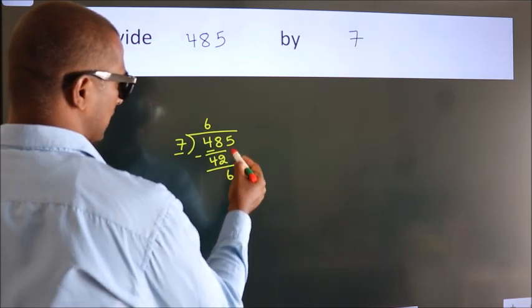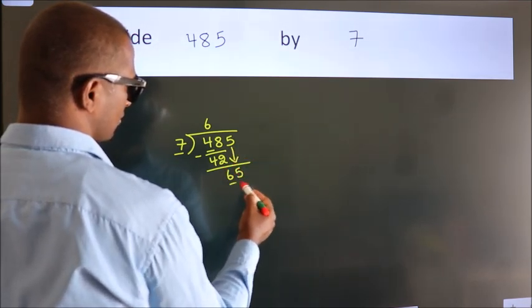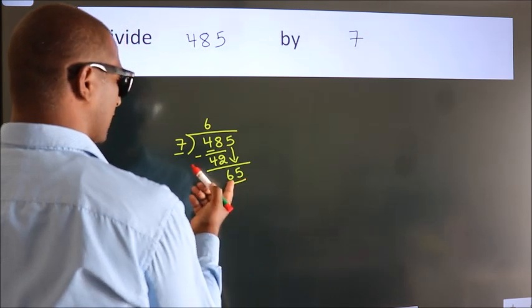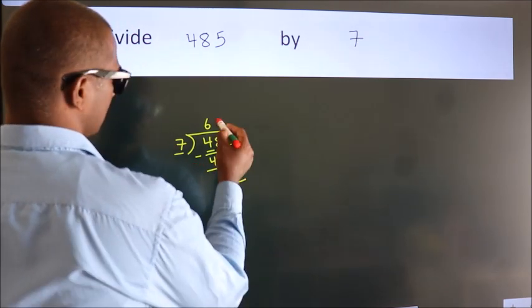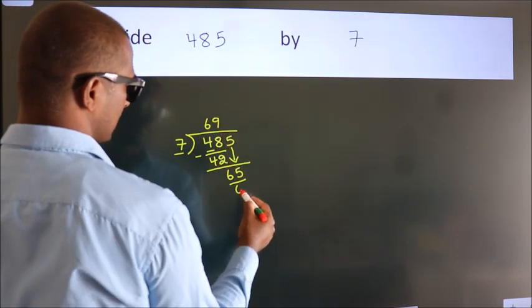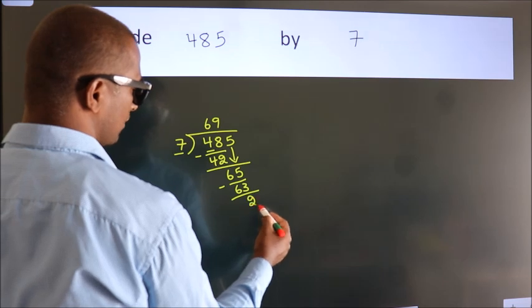After this, bring down the beside number. So 5 down, making 65. A number close to 65 in the 7 table is 7 times 9, which is 63. Now we subtract. We get 2.